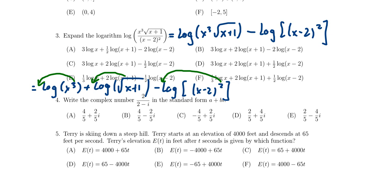For which we see that's exactly choice A, just like we said a moment ago. 3 log of x plus 1 half log of x plus 1 and minus 2 log of x minus 2. So using the three laws of logarithms, we're able to correctly expand this logarithmic expression.